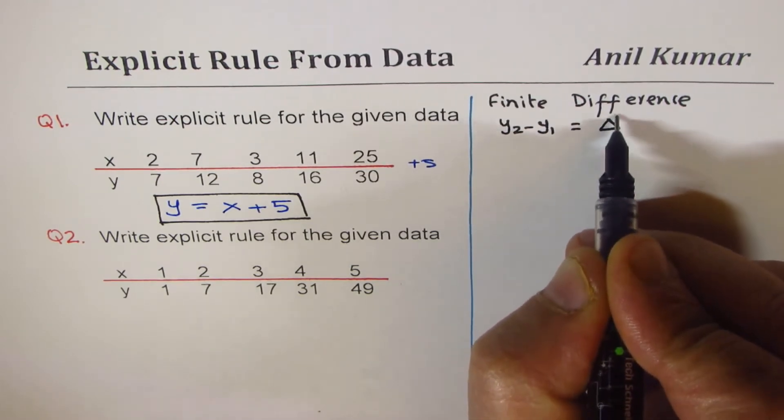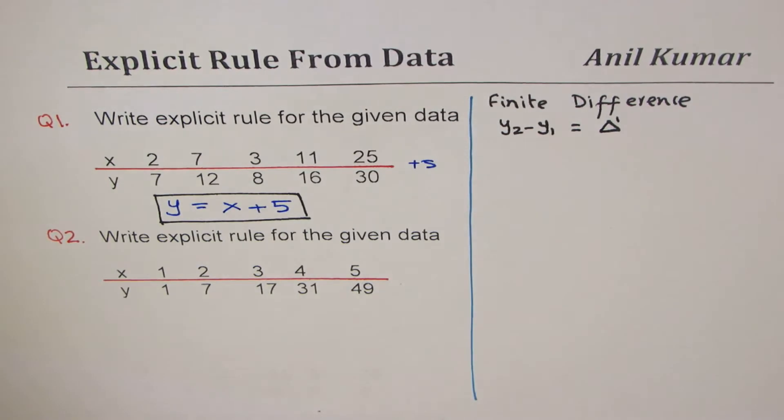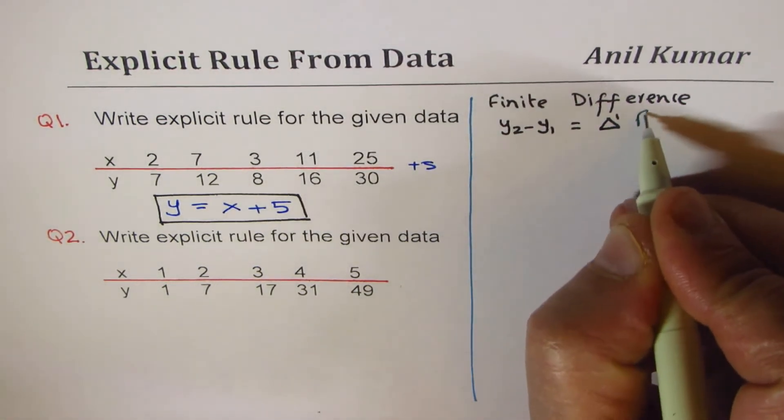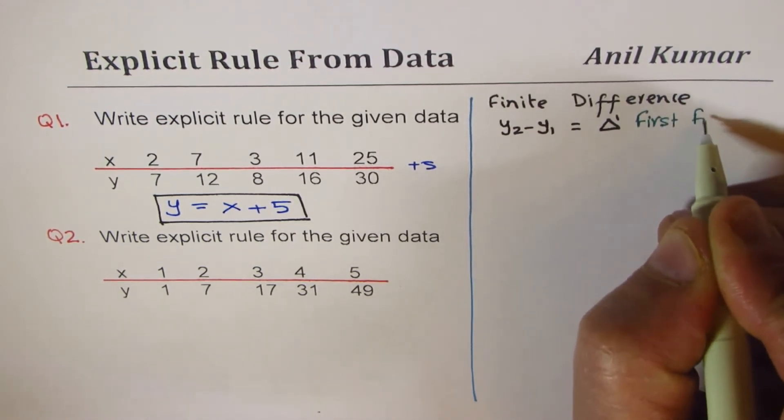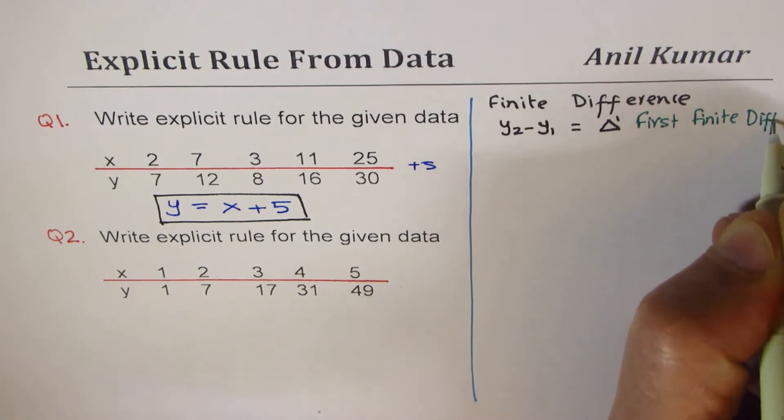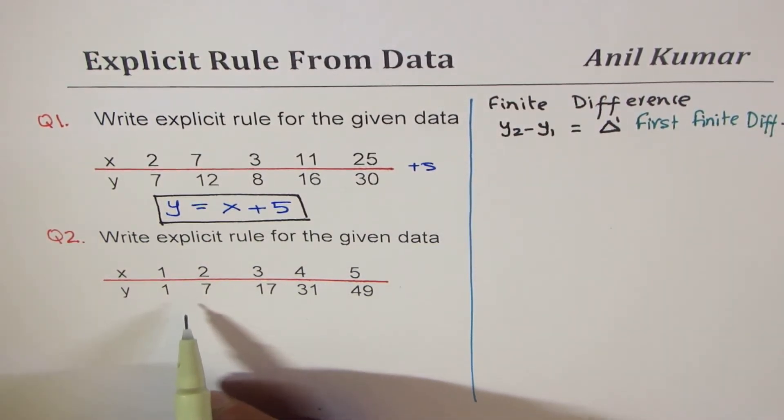This will be referred to as first finite difference. If first finite difference is constant, then we are expecting a linear function.